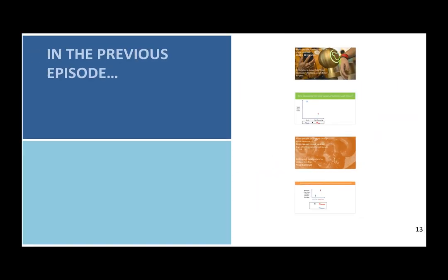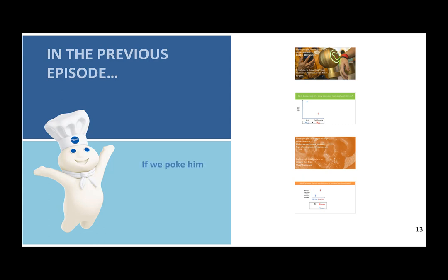Now I'm going to introduce a good friend to explain one of the bedrocks of true experiments, which is trying to achieve a causal connection. And who better to explain that than the Pillsbury Doughboy. The causal connection in the case of the Pillsbury Doughboy could be: if we poke him, does he giggle? And if we don't poke him, does he not giggle? If we can figure out a way to run an experiment that proves the poking is causing the giggling, then we have a strong experiment.